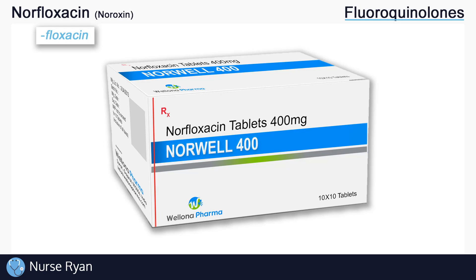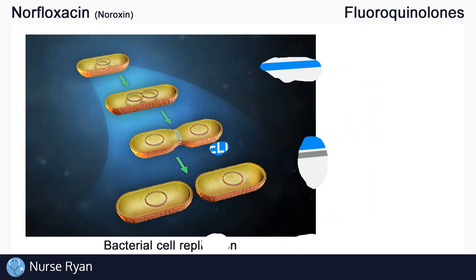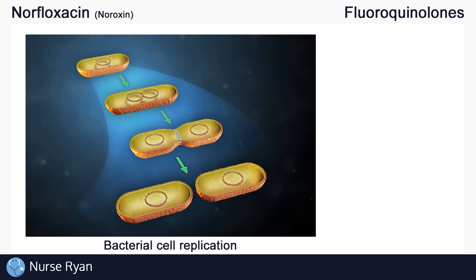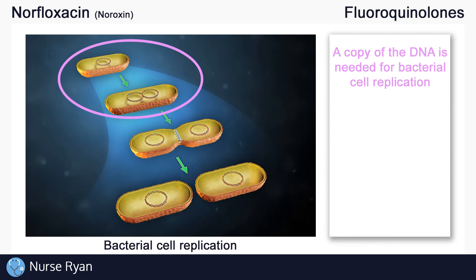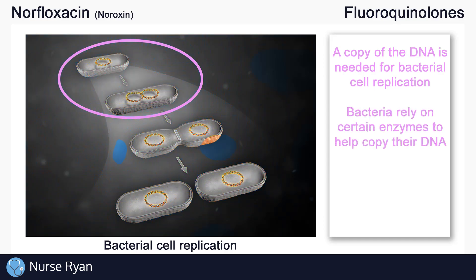Let's go over how fluoroquinolones work to fight against bacteria. In order to survive and thrive in a host like you or me, bacteria need to be able to replicate themselves. Before a bacteria replicates or divides, they first need to make a copy of their DNA, which would then be passed to the replicated cell. So in order to copy their DNA, bacteria rely on certain enzymes to help get the job done.